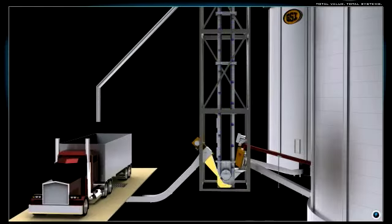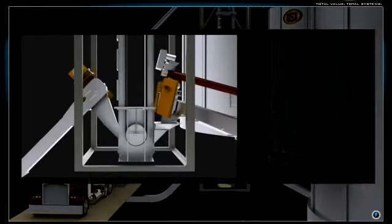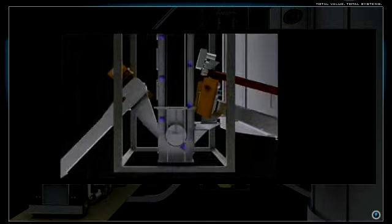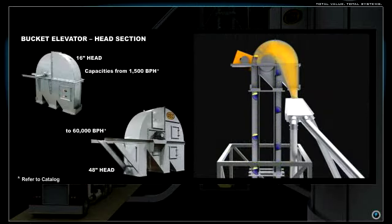The grain moves up the receiving leg in a bucket conveyor system. The grain travels around the top of the bucket elevator into the head section.